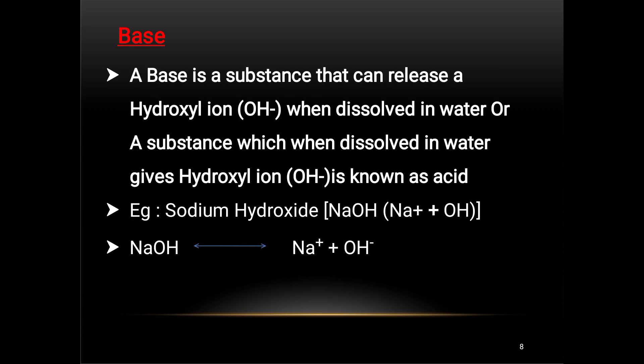A base, according to Arrhenius theory, is a substance that releases OH- (hydroxyl) ions when dissolved in water. Example: sodium hydroxide, NaOH, when dissolved in water forms OH- ions and Na+.